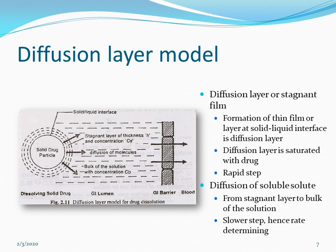The diffusion layer model involves two steps. The first step is the formation of a diffusion layer when a solid is placed in the bulk of solution — a diffusion layer forms at the solid-liquid interface, and this step is very rapid. The second step is the diffusion of soluble solute from the stagnant layer into the bulk of solution, which is a slower step and determines the rate of dissolution.